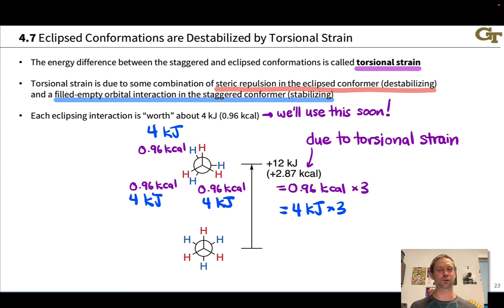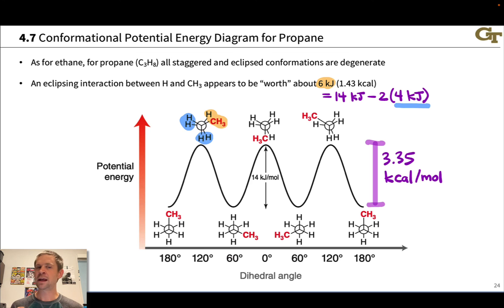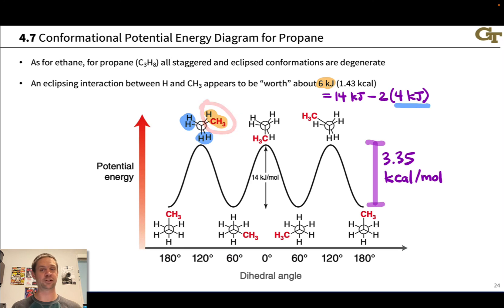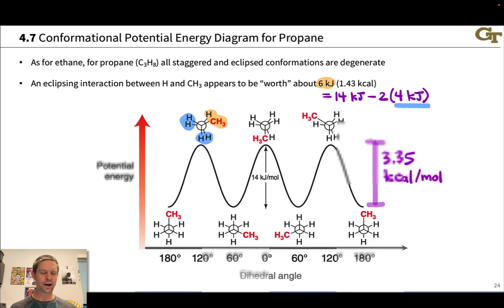Wherever we see C-H eclipsing interactions in other structures, we can hypothesize an energetic penalty of about 4 kilojoules, even in structures much bigger and more complicated than ethane. Propane is in a similar situation in that all of its eclipsed and staggered conformers are equivalent to each other. The only difference between ethane and propane is that in the eclipsed conformers of propane, where we have an extra carbon, there's a CH3-H eclipsing interaction where ethane had just an H-H eclipsing interaction — and there's one and only one of those in the eclipsed conformer of propane.